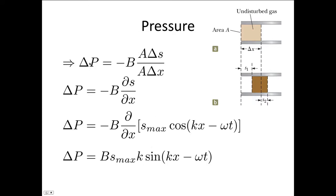OK, now we're just going to substitute in. Delta P is equal to minus B. And we said it was delta V on VI. Delta V is A delta S and V is A delta X, so now the A's will cancel out. And taking the partial derivative, so replacing this capital delta with a little delta to indicate that we're taking just a very small increment, we can write this as minus B dS dx.